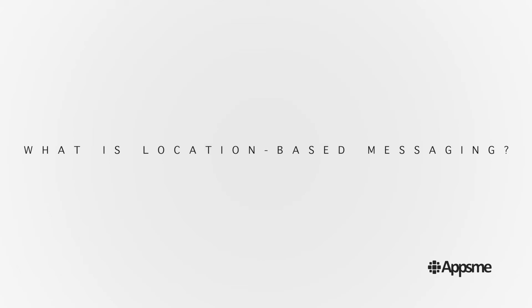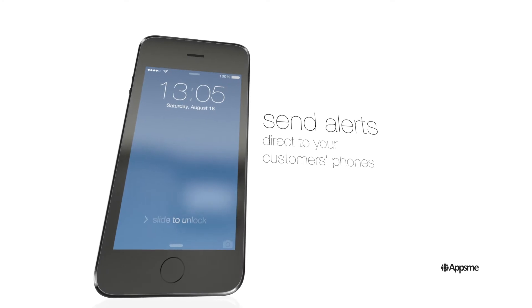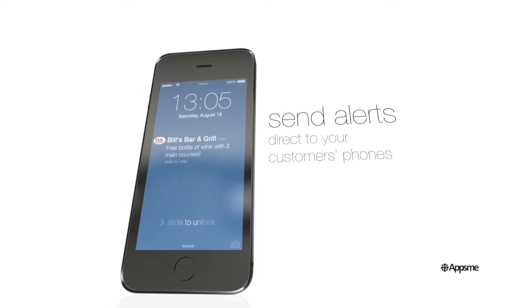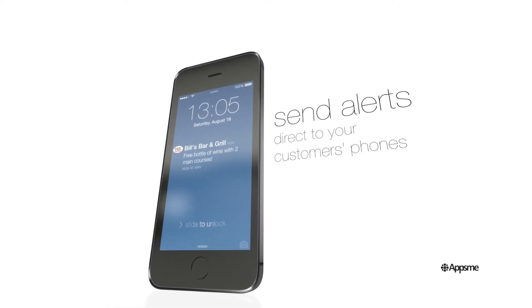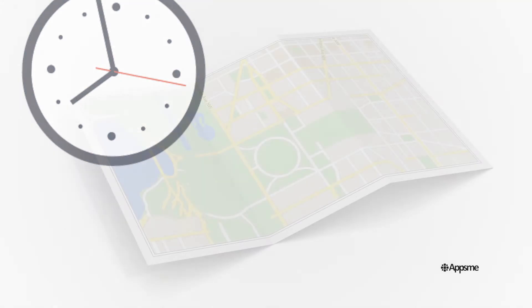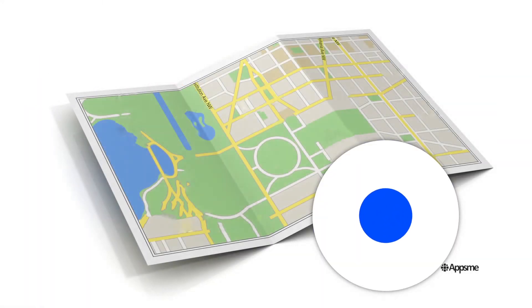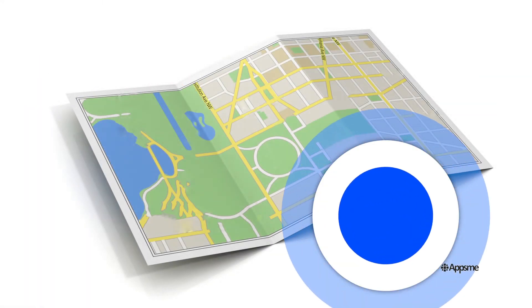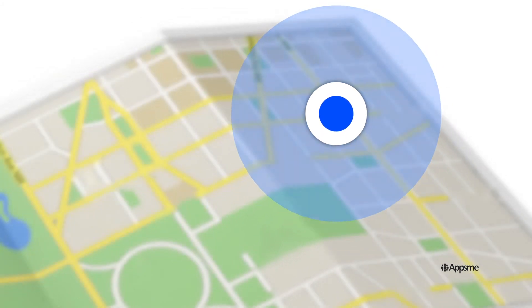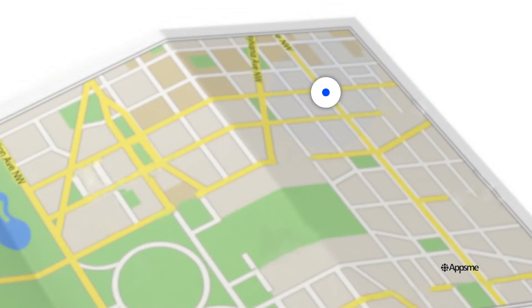What is location-based messaging? Well, it's actually really simple. It's a way for businesses to send push notifications to customers at the perfect time and place using geofences. A geofence is simply a virtual perimeter around a certain location.